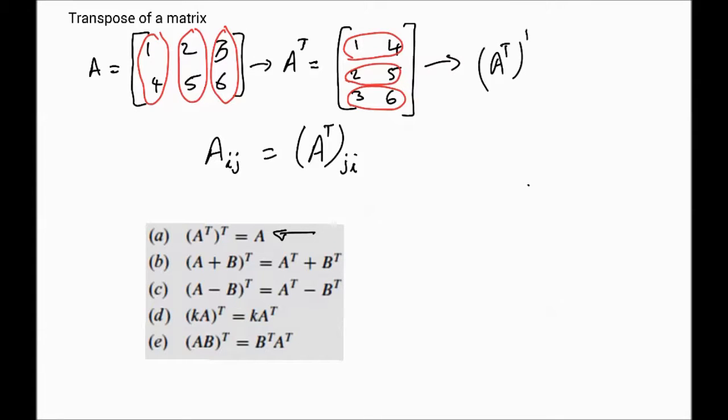that will be A^T transpose in this way. Then what will happen is 1, 4, the rows become the columns. So 2, 5, and 3, 6. So if you look at that, that's the same as this matrix. So that's all that's saying. This is simply saying that the transpose of the